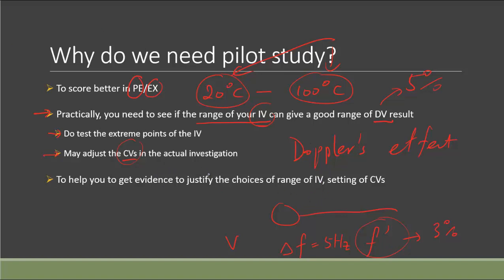One way to address this is to manipulate the control variable. In this experiment, the original frequency is a constant — a control variable. If you increase that frequency by 10 times (assuming it stays within the audible range and is measurable by your equipment), then even at the same 3% change, the delta F would also be 10 times greater — around 50 Hz — making it much more measurable in terms of absolute value.